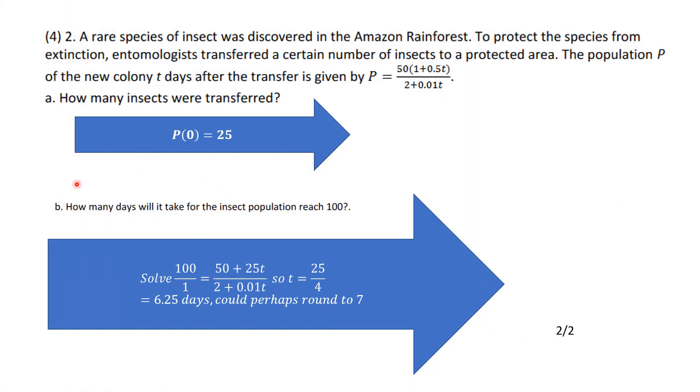Number two, there were two parts A and B. A rare species of insects was discovered in the rainforest. To protect the species from extinction, entomologists transferred a certain number of insects to a protected area. The population of the new colony T days after the transfer is given by P equal 50 times the whole of 1 plus 0.5T divided by 2 plus 0.01T. How many insects were transferred?